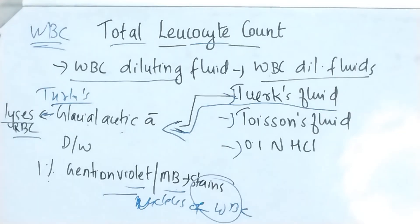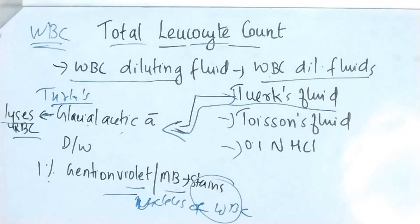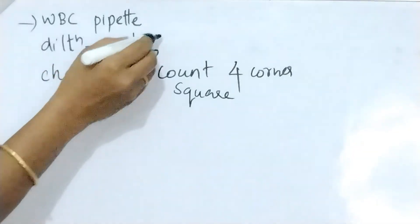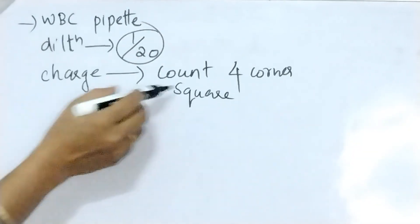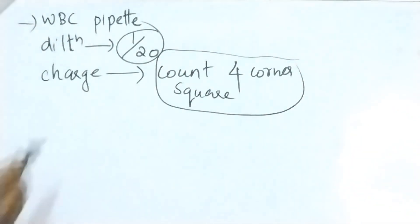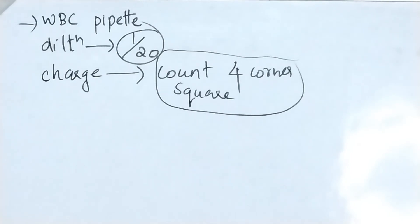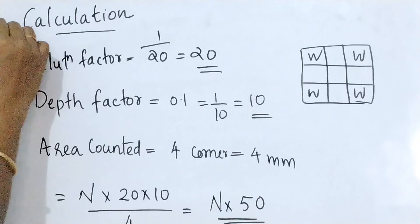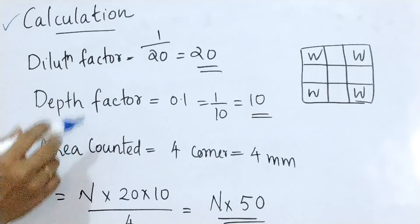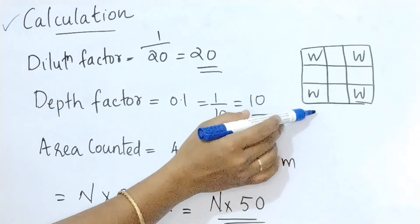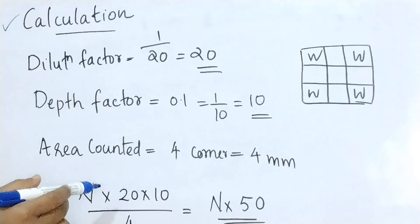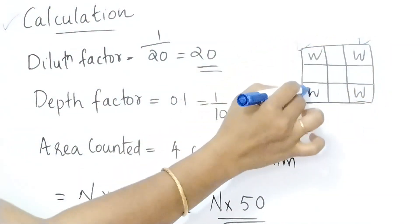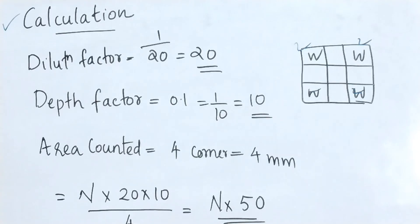So blood is diluted with WBC pipette in 1:20 dilution and charged to the counting chamber. Here WBC pipette is used, the dilution is 1 in 20 and counting the 4 corner squares of WBC area. So here we are going with the calculation. Here the dilution factor is 20, depth factor is 10 and area counted is 4 because we are counting 4 corner squares of 1 mm square each.